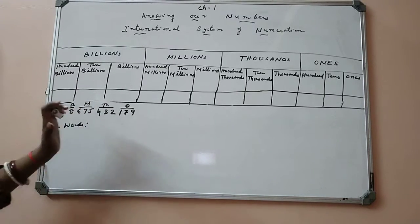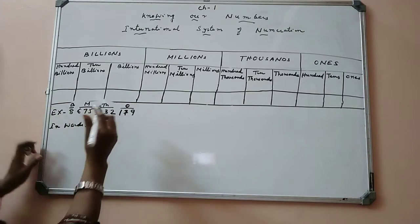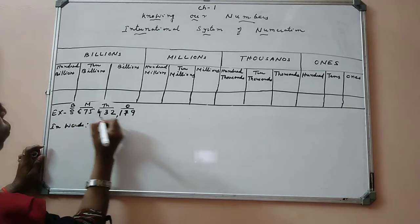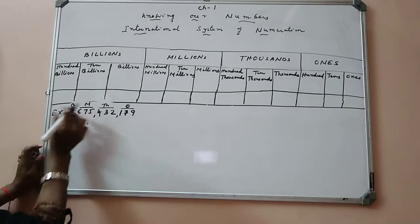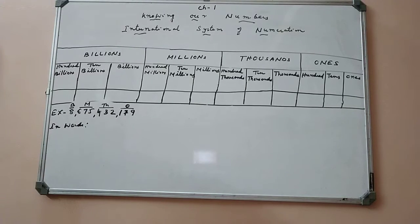Now we have segregated our numbers according to periods. Then we can separate this by putting commas or mentioning the space between them. Now we can easily read these numbers as well as write the number easily.